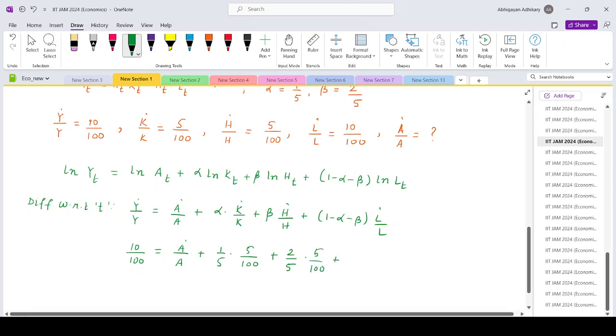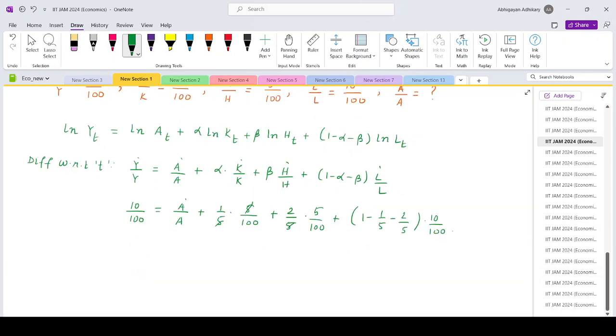Plus 1 minus 1 by 5 minus 2 by 5, which is 2 by 5, times 10 by 100. So the 5 and 5 will get cancelled out. So 10 by 100 equals a dot by a plus 1 upon 100 plus 2 upon 100.